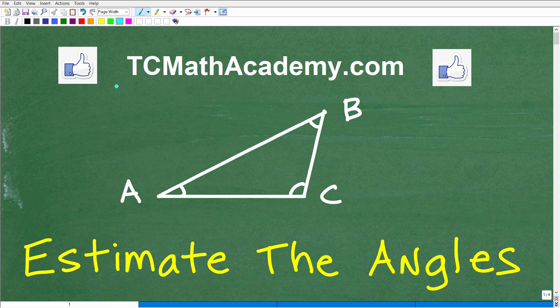Hello, this is John from TC Math Academy. What I have for you here is a math problem where you're not going to have to be 100% correct. There's going to be some leeway here. The problem is I'd like you to estimate the angles. Here I have a triangle with angle A, B, and C. Take a look at this, eyeball it, and see how good you are at estimating angles.